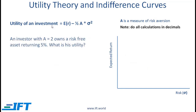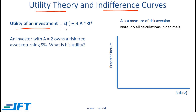We will talk about utility theory and indifference curves. We can measure the utility of an investment to a particular investor using this formula. The utility is equal to the expected return minus half of A, where A is a measure of risk aversion, times sigma squared, which is a measure of the risk of the investment.